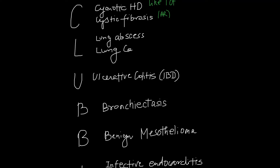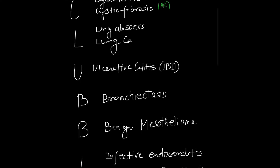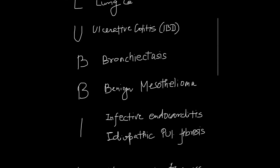The mnemonic we use is CLUBBING — C, L, U, double B, I, N, G. C is for cyanotic heart disease and cystic fibrosis. L is for lung abscess and lung carcinoma. U is for ulcerative colitis, which is an inflammatory bowel disease. The first B is for bronchitis.